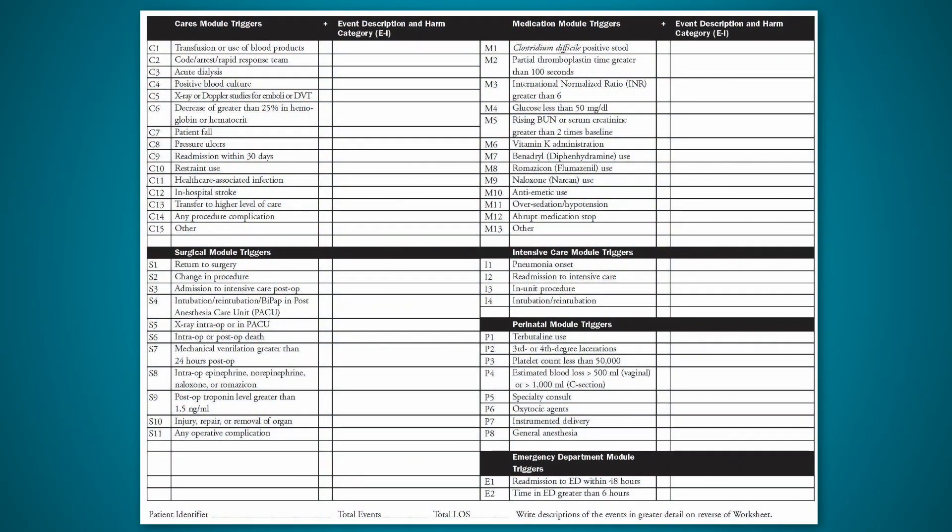So we looked at how we might measure in a way that gives us valuable information yet doesn't place a huge burden on staff. The Global Trigger Tool is a way to look at a patient record to identify if something unintended and harmful may have occurred as a result of the medical care that we're delivering and the way our systems are designed. It's a little bit like an investigative tool, because we use triggers, or what we would call clues, which makes the review of the record faster.